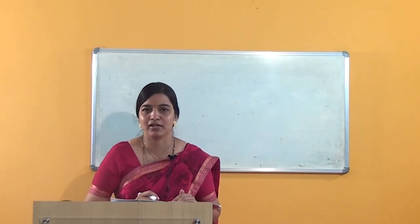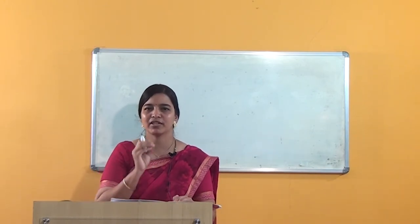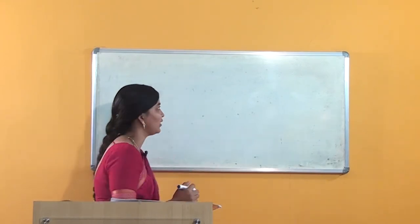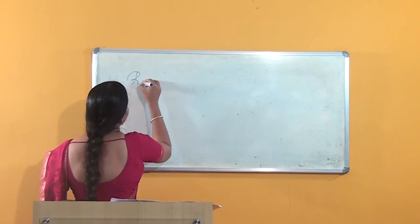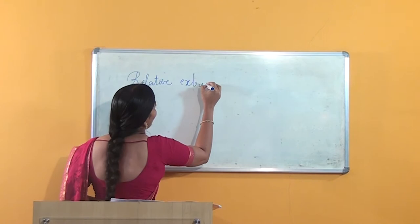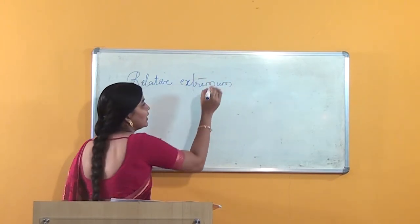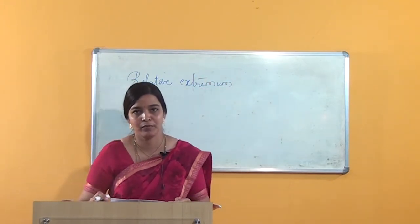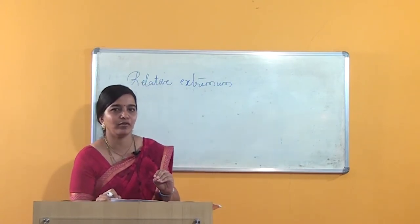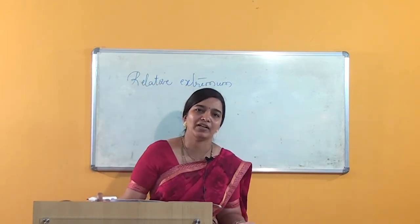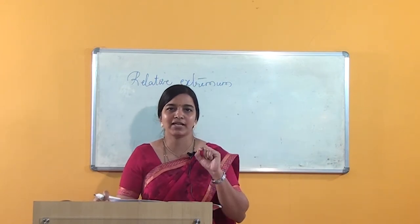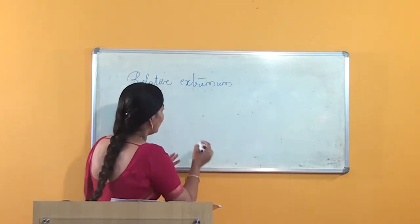We will study today one theorem. To study that theorem, we need some basic definitions and basic concepts. The first one is relative extremum, or I can also call it as local extremum. In simple words, if a function has a relative maximum or a relative minimum, then it is said to have a relative extremum at a point, say c.